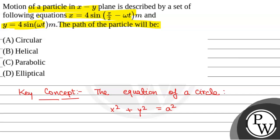Now, we have been given two equations: x is equal to 4 sin pi by 2 minus omega t. That will be equal to another concept that will be used: sin pi by 2 minus alpha is equal to cos alpha. So, from here this will be 4 cos omega t.